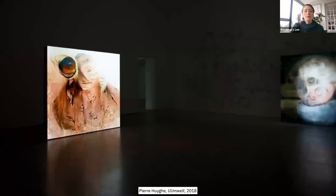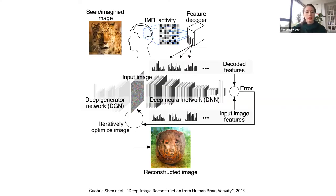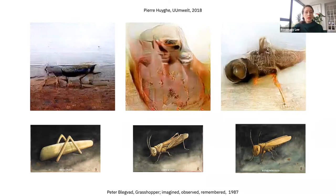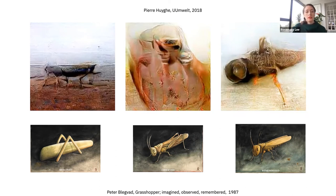Pierre Huyghe invokes the concept of Umwelt directly in the title of his work, using it to describe a complex process of mediation between various kinds of images involving biological and technical systems. Using an experimental technique called deep image reconstruction, the artist translated the neural activity of individuals thinking about a particular object into images shown in the exhibition — involving a combination of fMRI scans and a GAN to translate brain activity into a visualization. The work also appears to reference images by Peter Blegfeld depicting variations of a grasshopper as it is imagined, observed, and remembered. In this way, Umwelt demonstrates how technology intercedes in the mediation of perception, but also how we think about what we perceive.